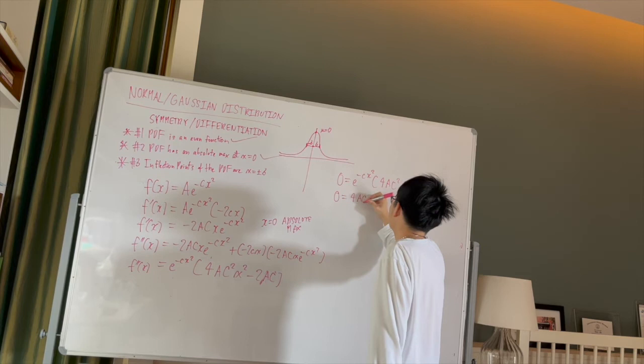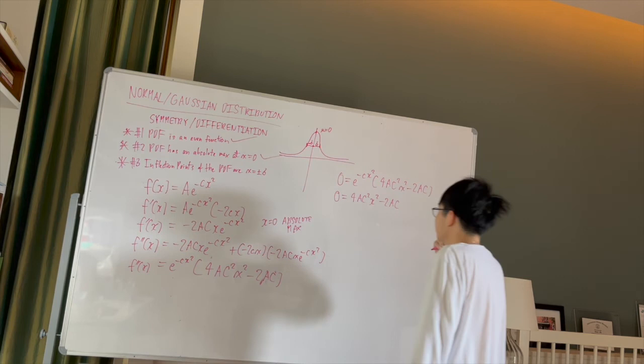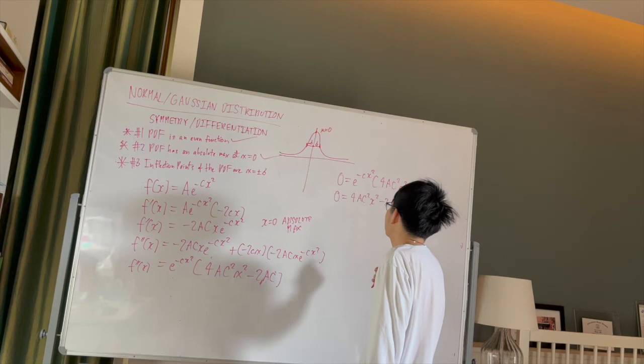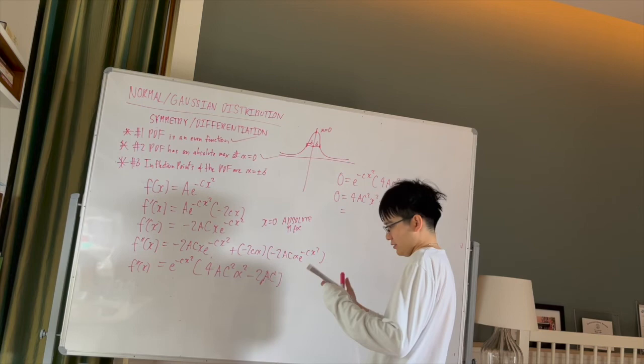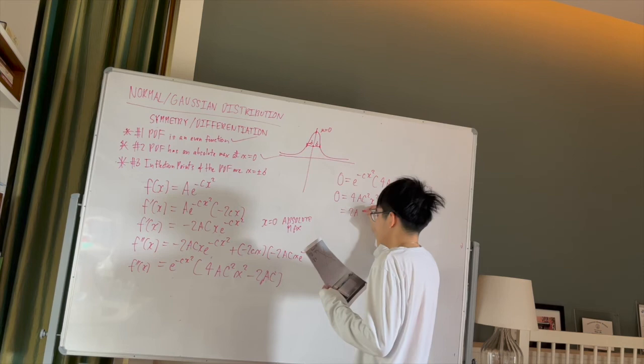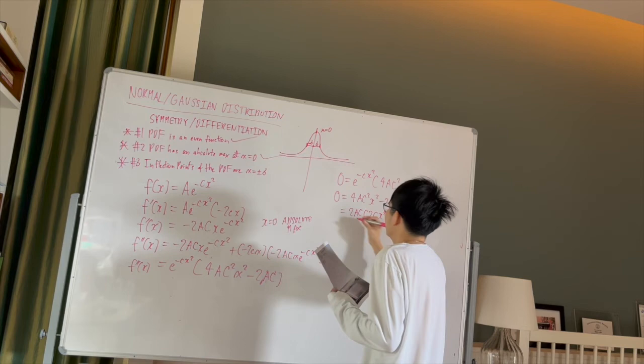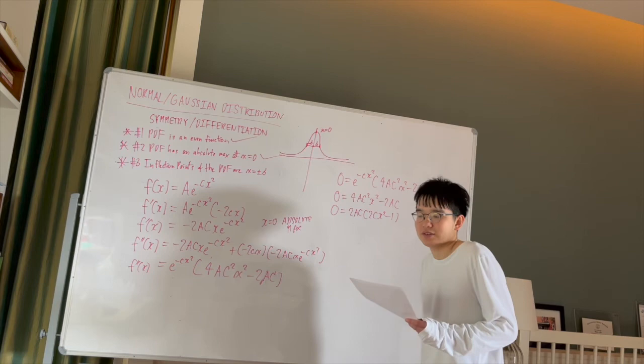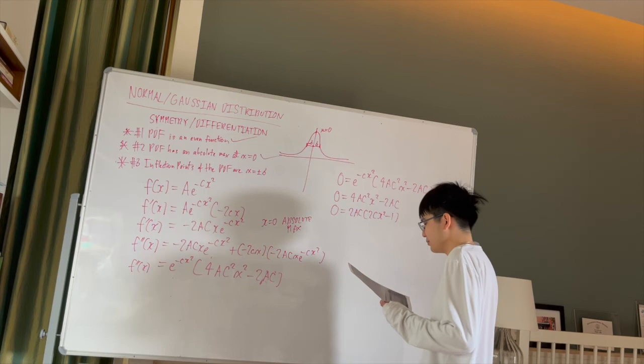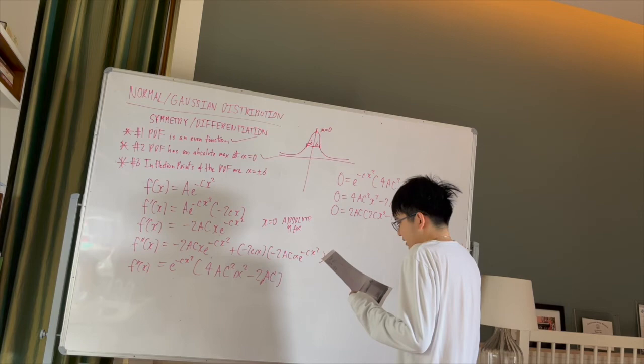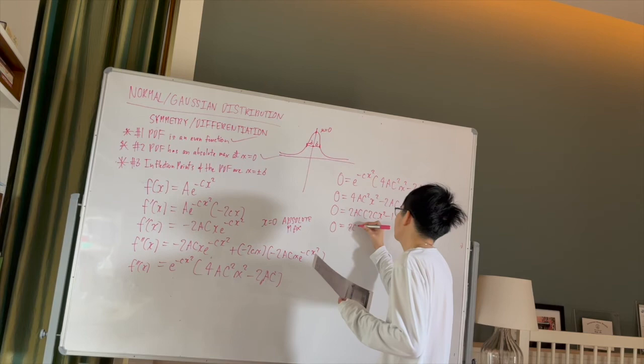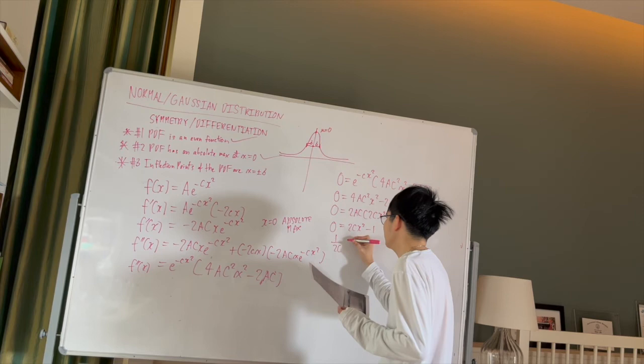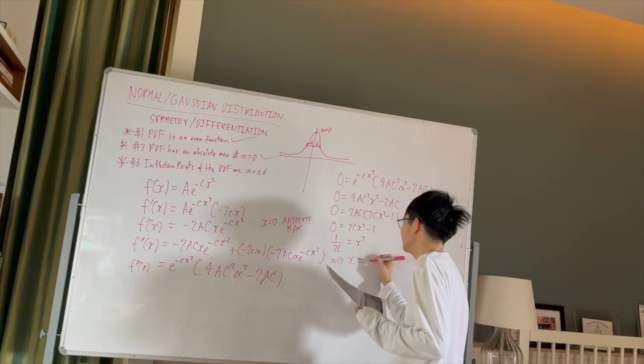And now as usual we can ignore the exponential part, this guy, and purely focus on this here, linear part. So zero equals 4 A C squared x squared minus 2 A C. And now typically what you want to do is, yeah I think overall you would rather want to factor. So this becomes 2 A C times 2 C x squared minus 1. You always want to do this just to, I mean technically you could add 2 A C and then divide by 4 A C squared, but then you might be missing out on a certain factor. So that's why I always prefer factorization first. But anyhow it's up to you. If it doesn't change regardless. We can ignore the 2 A C constants. So you get 2 C x squared minus 1, which just becomes 1 over 2 C equals x squared, which implies that x equals square root of 1 over 2 C.